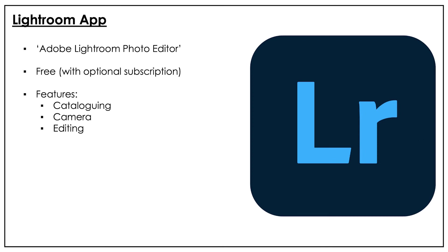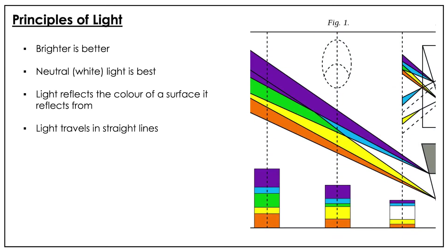Before we get into taking actual photos, let's talk about some principles of light. The general rule is that brighter is better — brighter light allows us to choose more favourable settings on our smartphones. It's not that you can't take photos in dull light, it just gets more difficult. Neutral light is best. If you're going to buy a lamp to photograph your artworks, get a daylight 5,500–5,600 Kelvin bulb. If you're photographing in the middle of the day using sunlight, that's generally the best time.